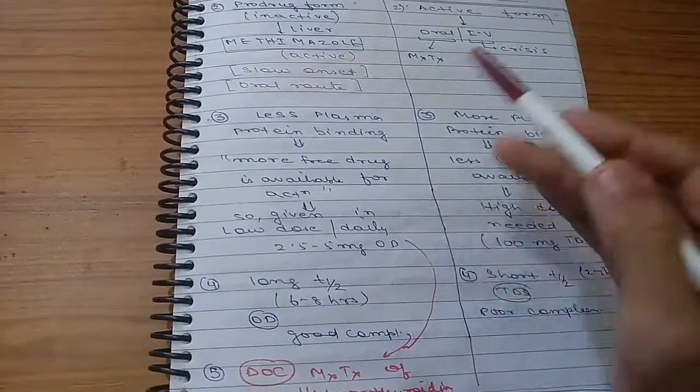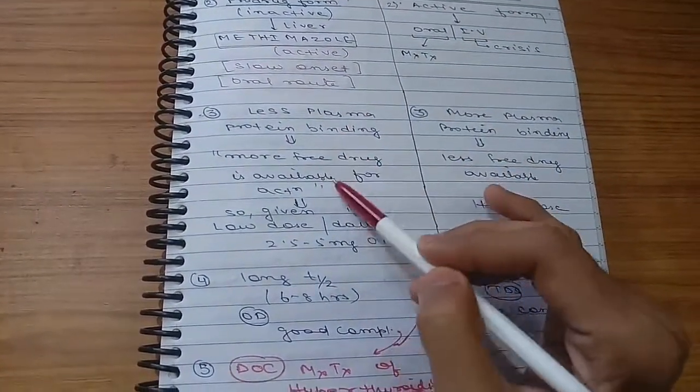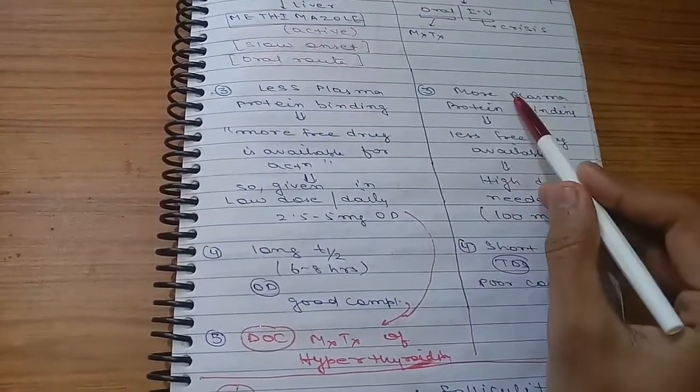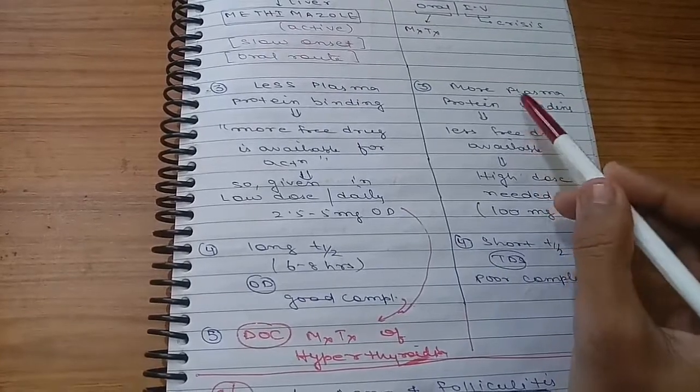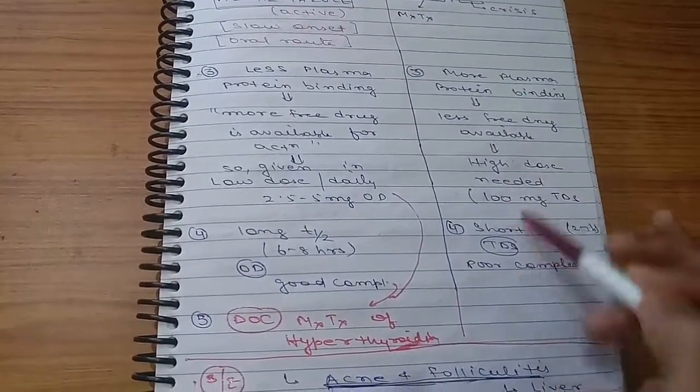Carbimazole has less plasma protein binding, so more free drug is available for action, so it can be given in low dose. Propylthiouracil has more plasma protein binding, so less free drug, so it is given in high dose.